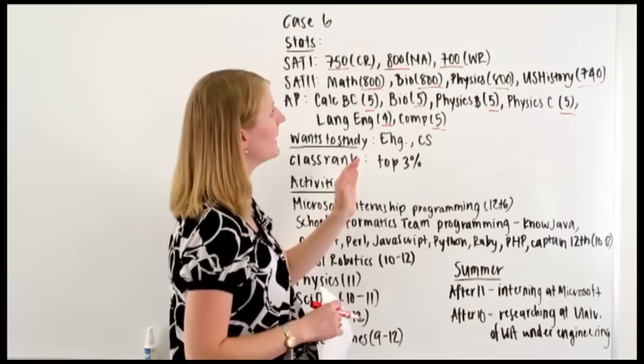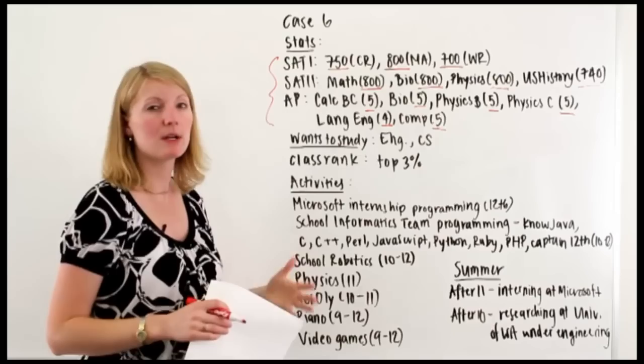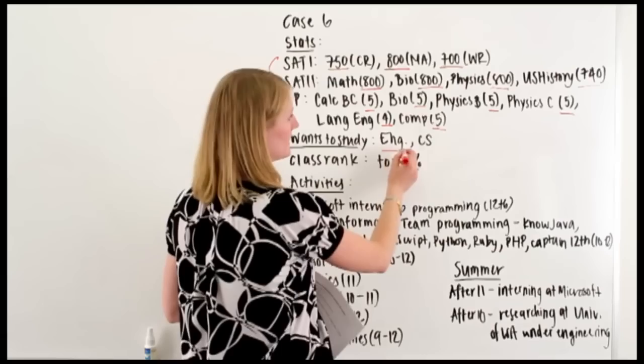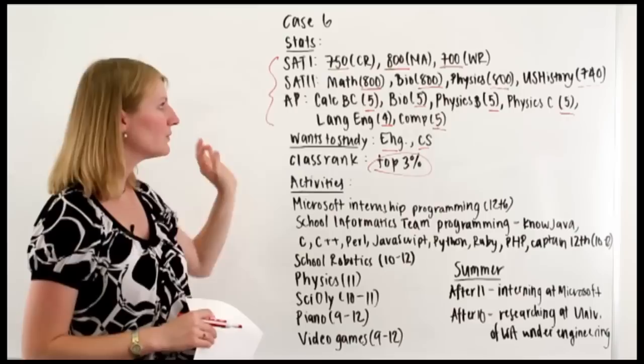And then U.S. history. So really this is a very strong, very competitive student academically. So I'm definitely paying attention. So now I want to see what else is this student all about. So he wants to study engineering and CS, and he's at the top 3% of his class. Hypothesis confirmed, definitely a math science kind of student, and therefore really angular from that perspective.